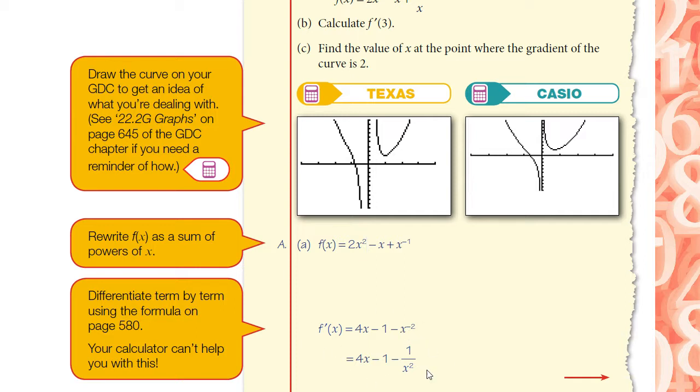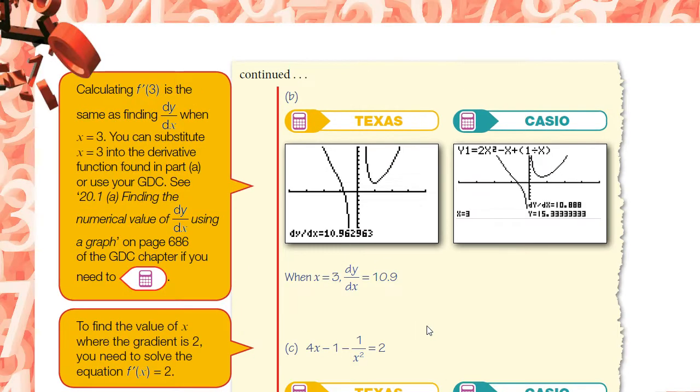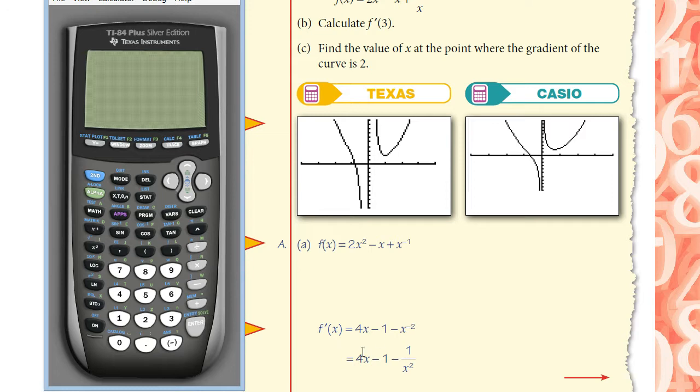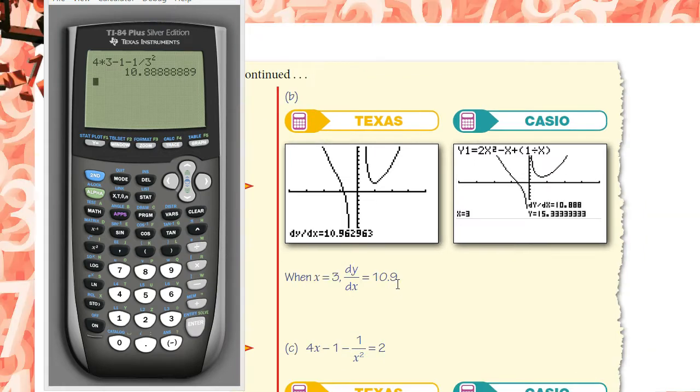So this is the rule that will give me the gradient of the tangent wherever I want to. Feed this function with an x, and it will give me the gradient. You're being asked to find the gradient of the tangent where x equals 3. Let's calculate it. This is the general rule. If you want to find the gradient where x equals 3, I have 4 multiplied by 3 minus 1 minus 1 divided by 3 squared. Is that correct? Yeah, 10.9.